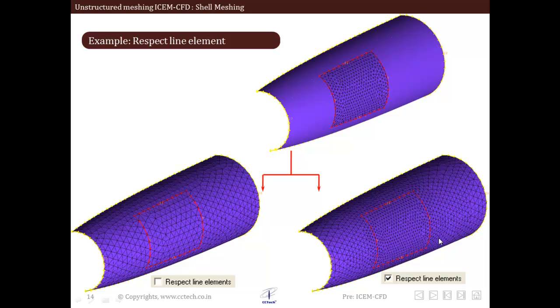So this original surface patch, we are having its respective finer mesh that was retained and then the remainder of the surface, that is remaining surface, was meshed with new parameters. So this is the use of respect line elements.